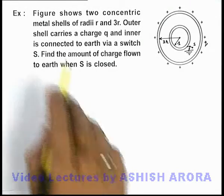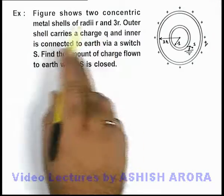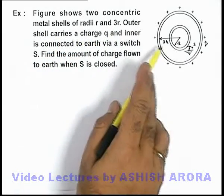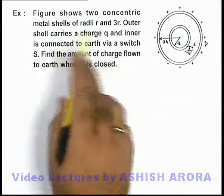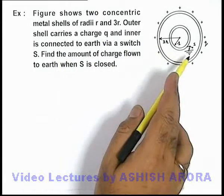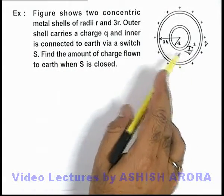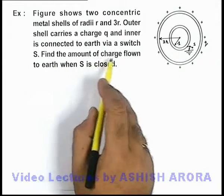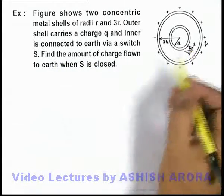In this example, the figure shows two concentric metal shells of radii r and 3r. The outer shell carries a charge q, and the inner shell is connected to earth via switch S. We are required to find the amount of charge flown to earth when the switch S is closed.